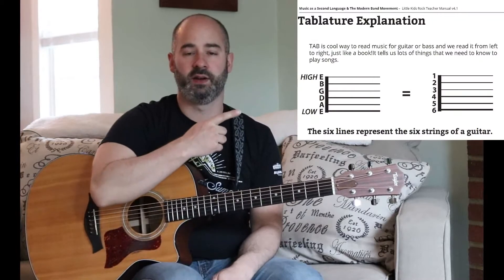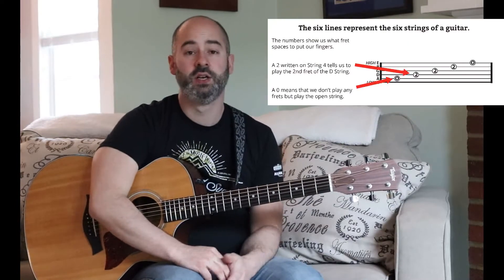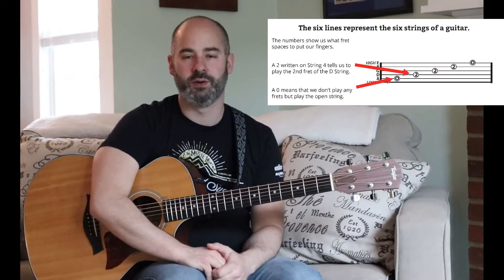As you remember from the last lesson with this graphic, the lines in tablature represent the guitar strings and the numbers represent the guitar frets. So today we're going to go through a lot of great riffs.